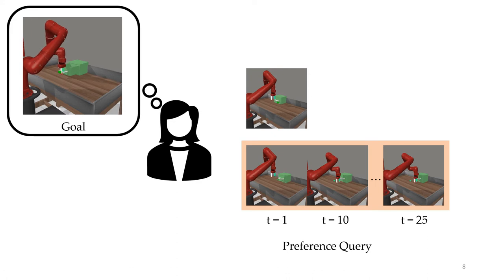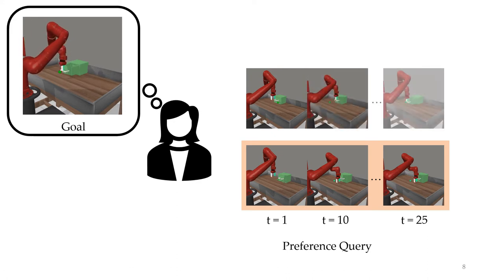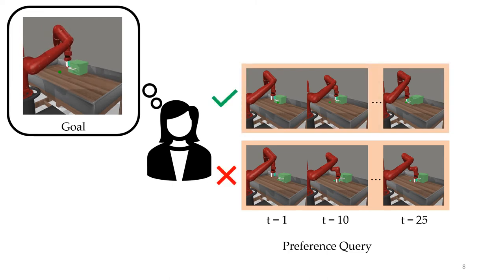The robot starts in roughly the same position. By time step 10, it's grabbed the handle, and by time step 25, it's opened the drawer. This could be a second option. The user would indicate that they prefer the segment at the top as it's actually opening the drawer, and we would use this data in order to train a reward model.